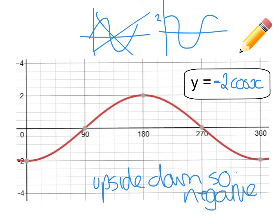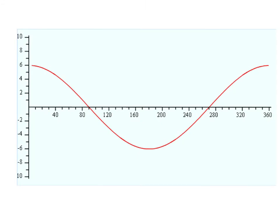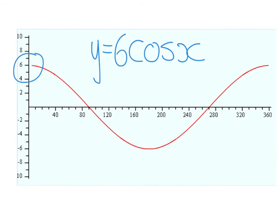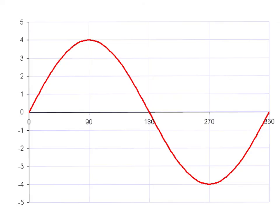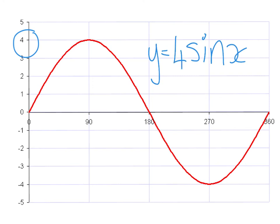Let's take a couple more examples. What could the equation of this one be? It starts high and goes low, so it's definitely a cosine graph. The highest number it goes to is 6, so it's a 6 cos x graph. What about this one? It starts at 0 and goes up into a kind of S shape, so it's definitely a sine graph. The highest number it goes to is 4, so this is a 4 sin x graph.